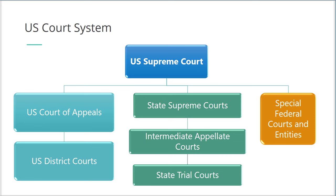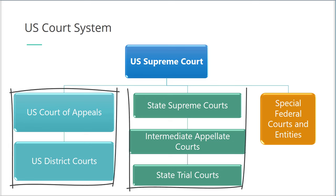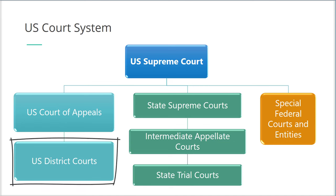Let's have a look at court systems starting with the United States. At the very top we have the U.S. Supreme Court. Below the Supreme Court there are two separate court systems: federal and state. The lowest federal courts are the U.S. District Courts. There are 94 federal judicial districts, including at least one district in each state, the District of Columbia, and Puerto Rico.